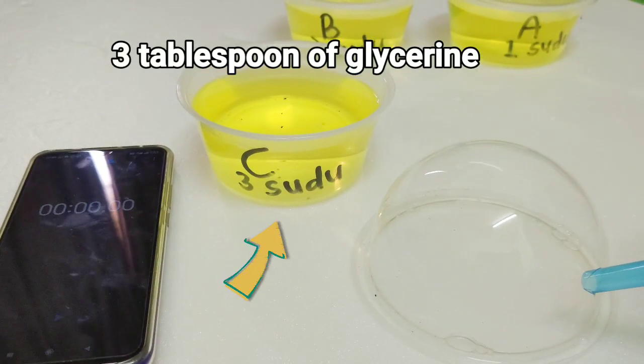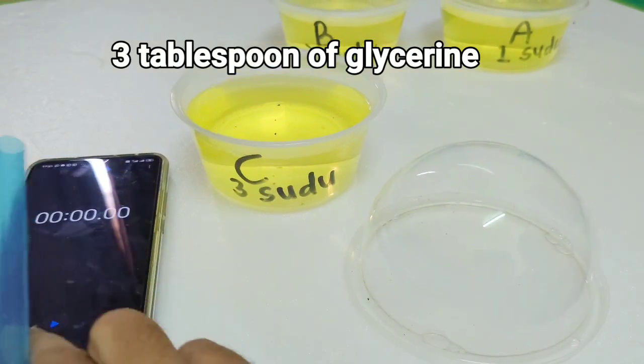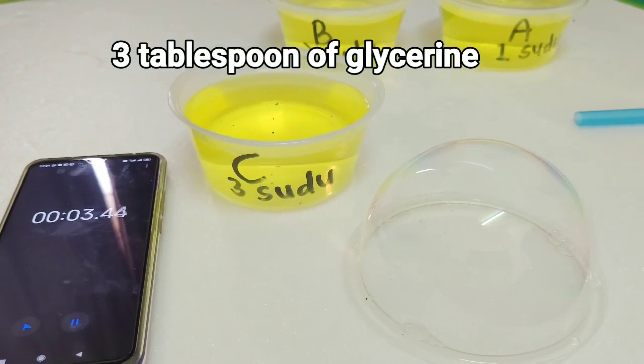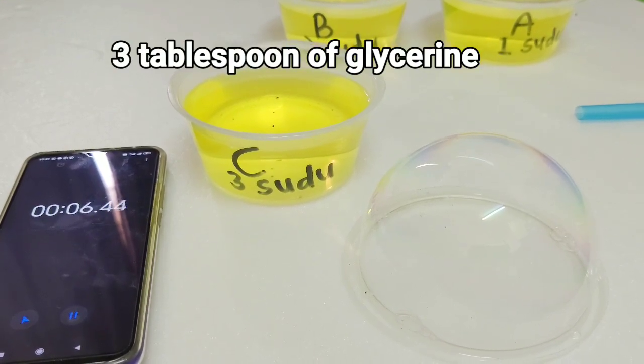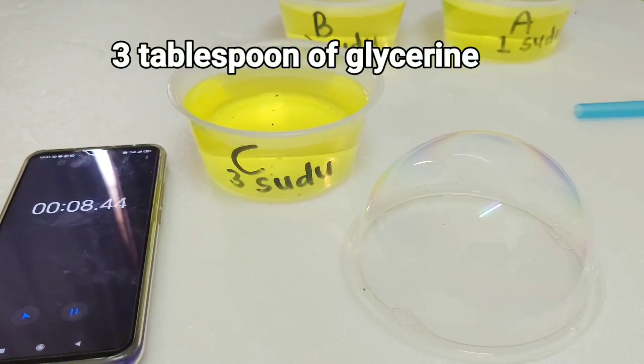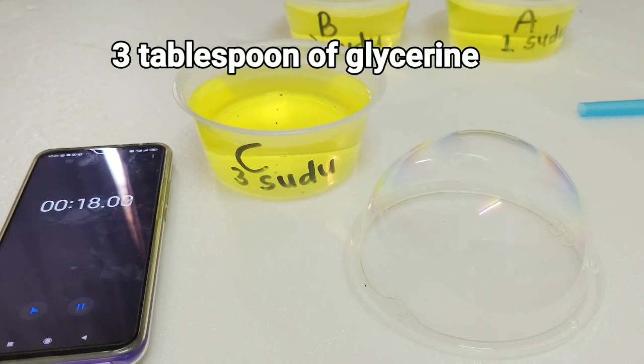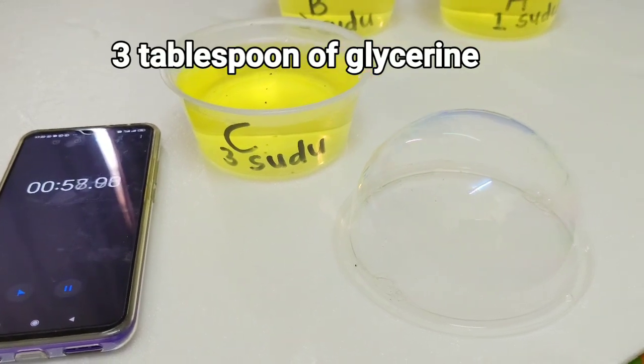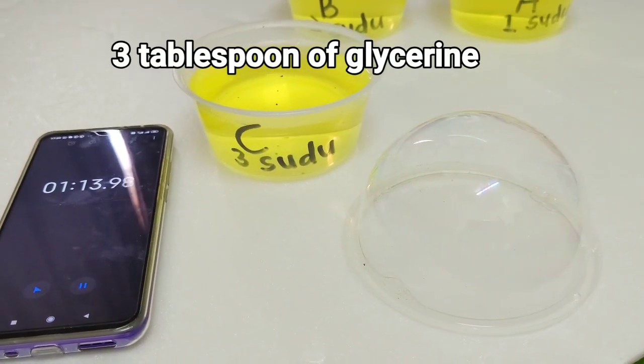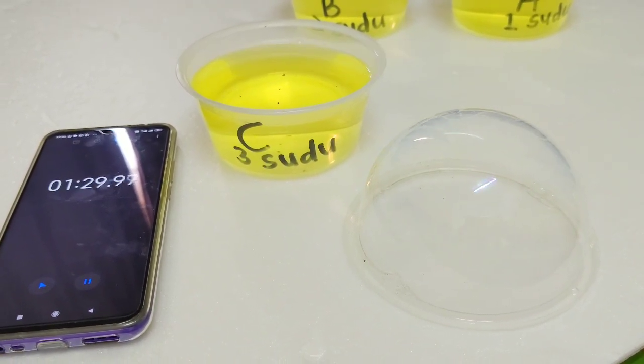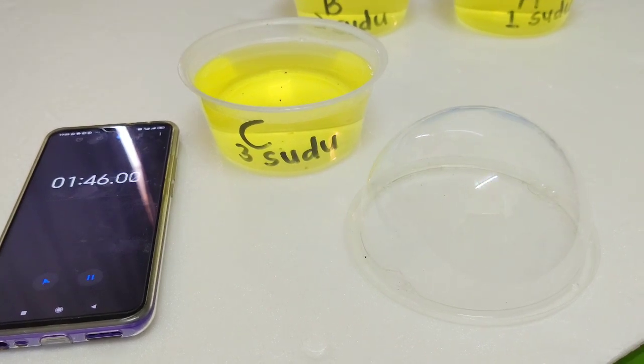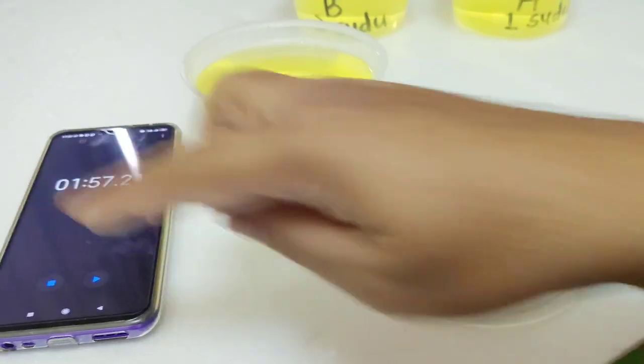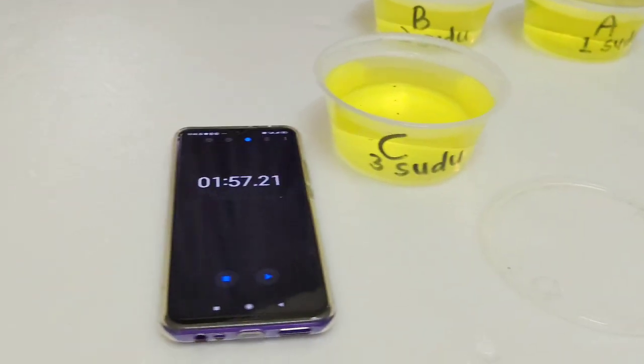Next, we'll use 3 tablespoons of glycerin. Set the stopwatch. Look at the bubble. Look at the bubble and record the time taken.